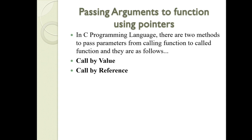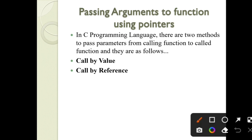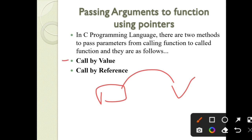We can pass the arguments to functions by using pointers. A pointer is a variable which is used to store the address of another variable. By using that address, we can know the value. By using pointers, we can pass arguments using call by value and call by reference — we can pass by value or we can pass by address.